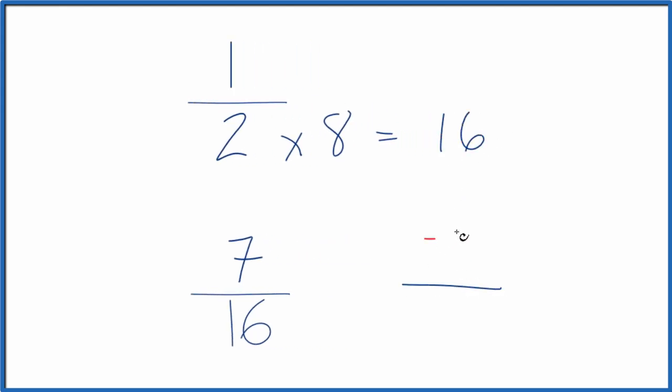And then over here we have 7 sixteenths. So that would actually give us this common denominator here. But I can't just multiply the denominator by 8. I need to multiply the numerator by 8 as well.